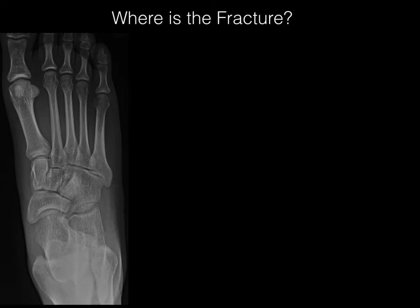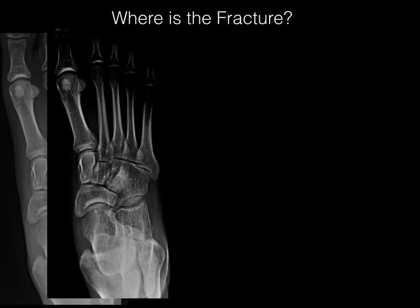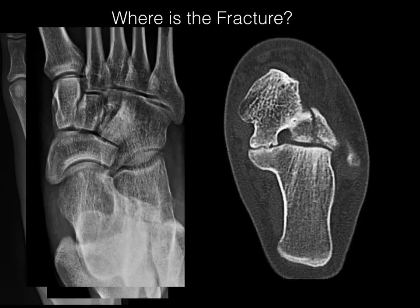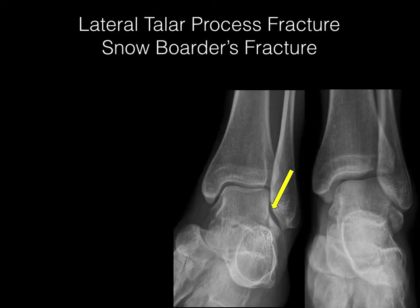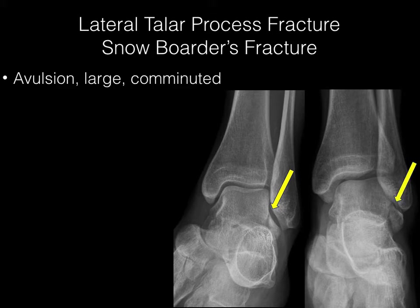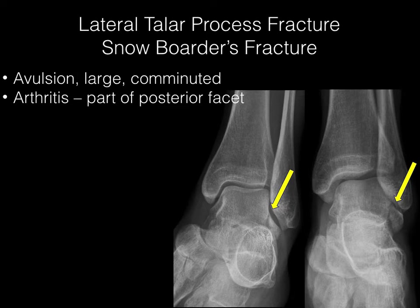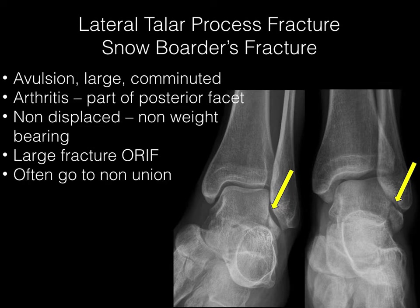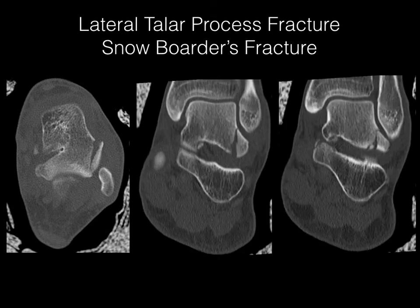Another case — where is the fracture? Adding contrast helps identify it. CT clearly shows the lateral talar process fracture, otherwise known as a snowboarder's fracture. These are avulsion fractures; they can be large and comminuted, and can lead to arthritis due to extension into the posterior facet. If non-displaced, usually treated with non-weight-bearing; if large, they can be surgically fixed, and may go on to non-union.